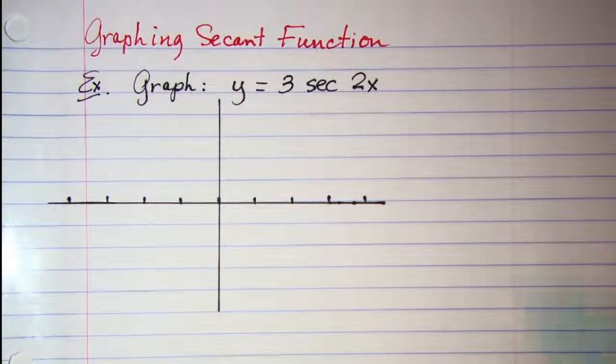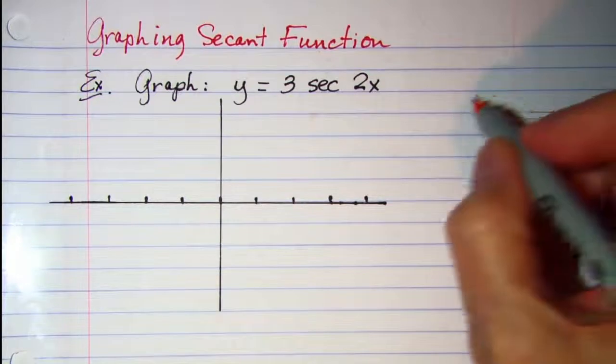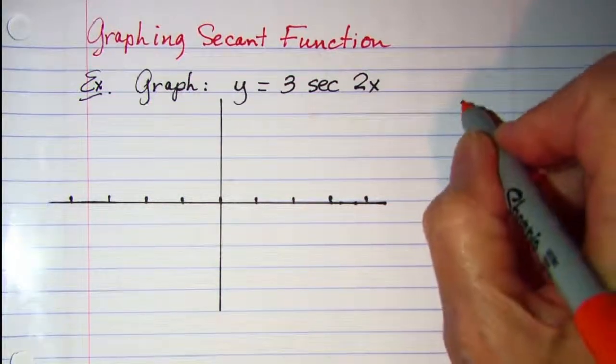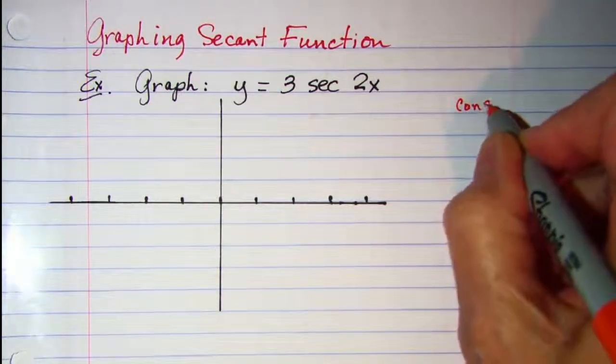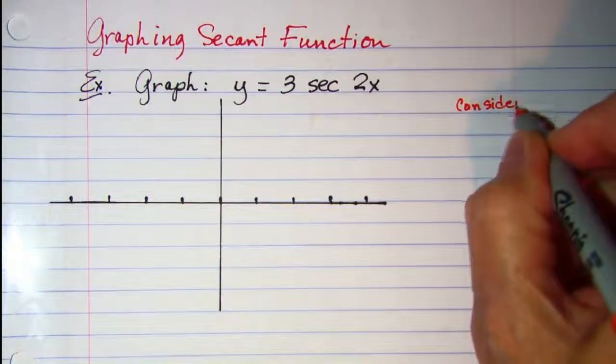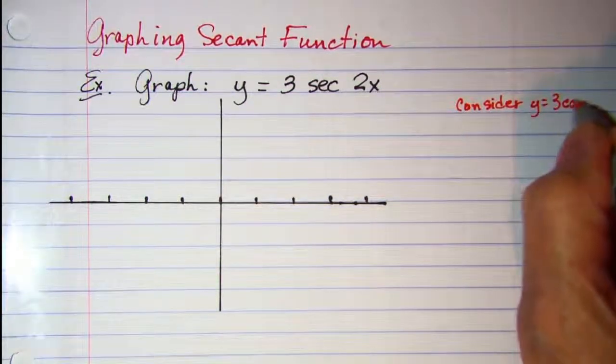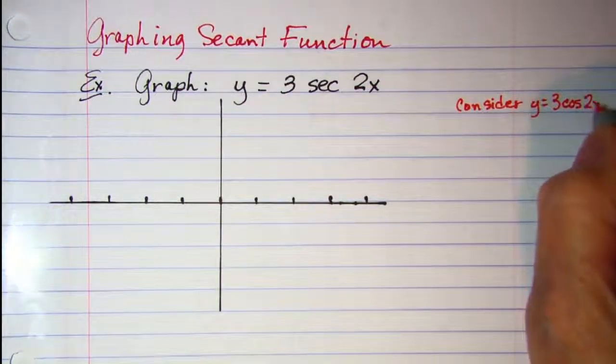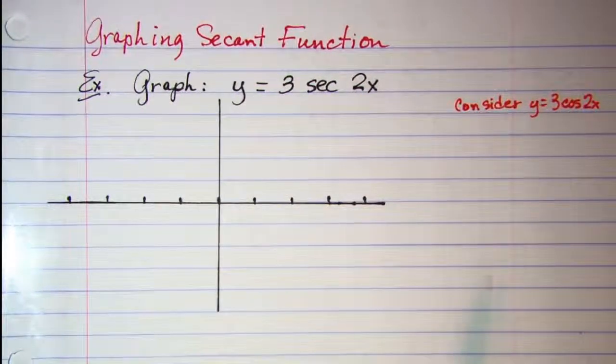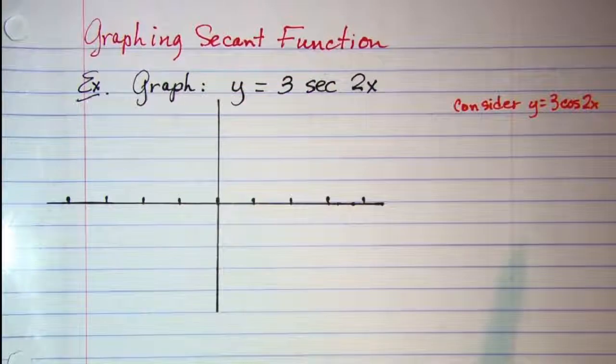Now let's first consider the graph of y equals 3 cosine 2x. Remember that secant is the reciprocal of cosine.